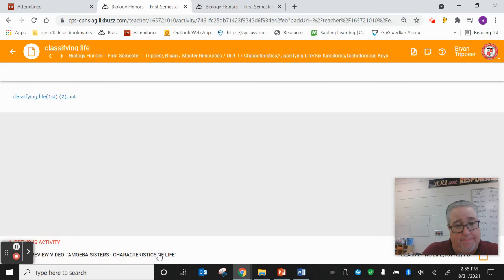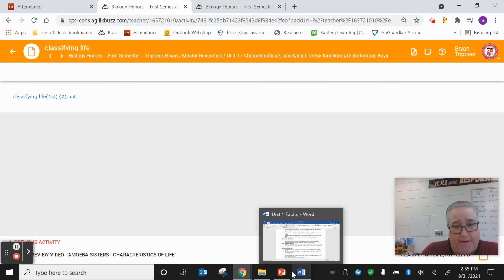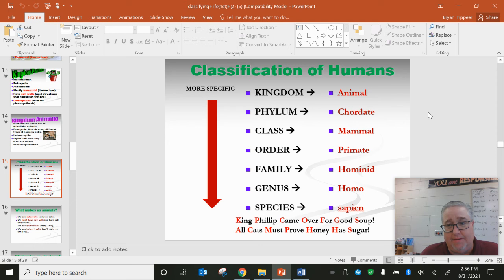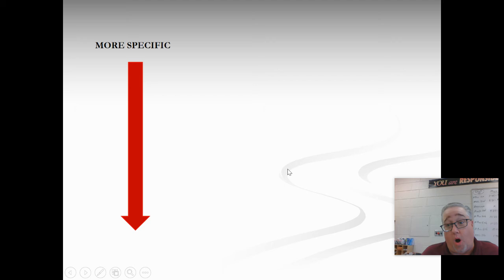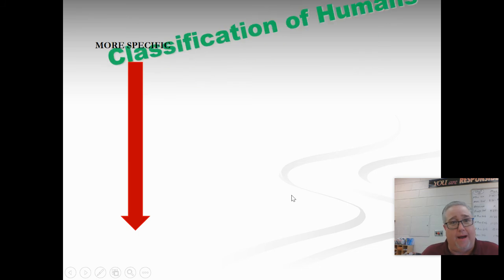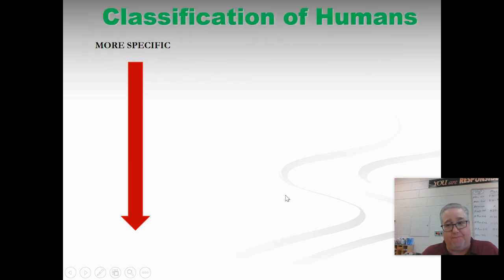All right, Honors Biology. Today I want to give you the second part of this lecture that we started previously about classifying living things. We talked in the previous lecture about the six kingdoms of living things, so everything that's alive we can put into one of six different categories — either an animal, a plant, a fungus, and so on. But today we're going to talk about how we can further classify things.